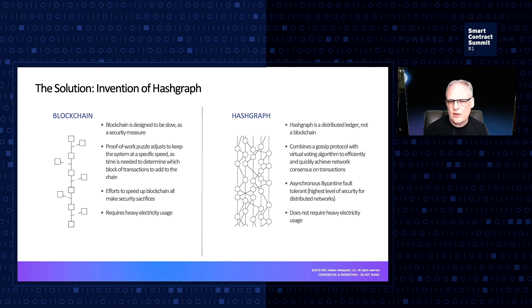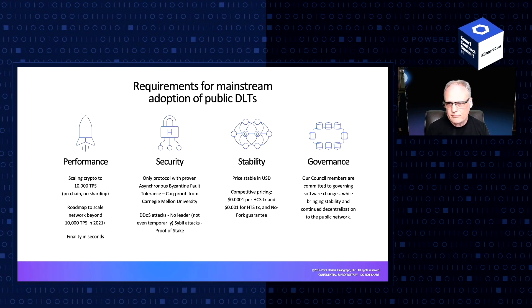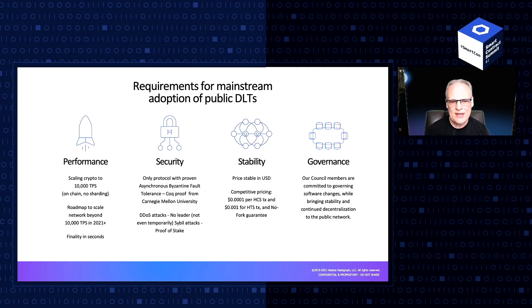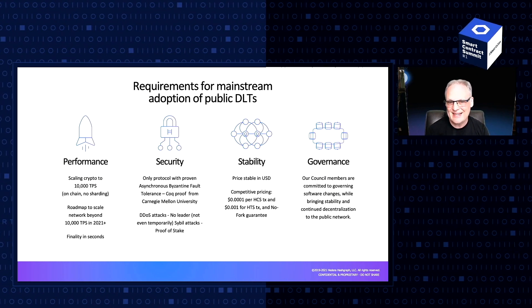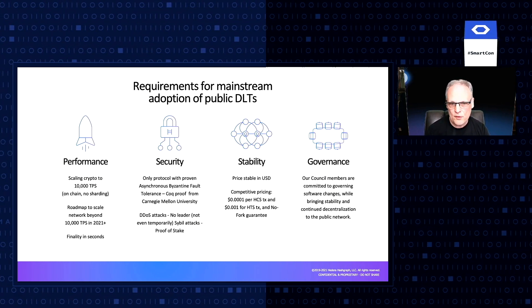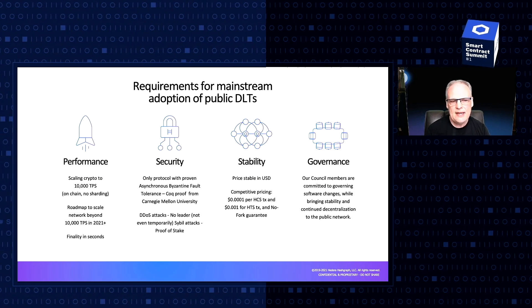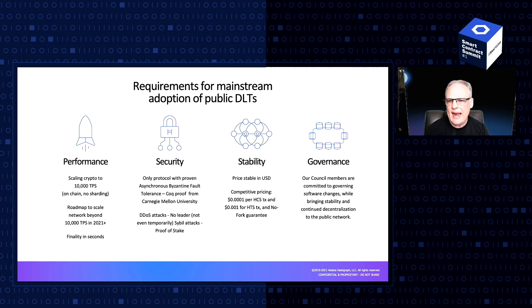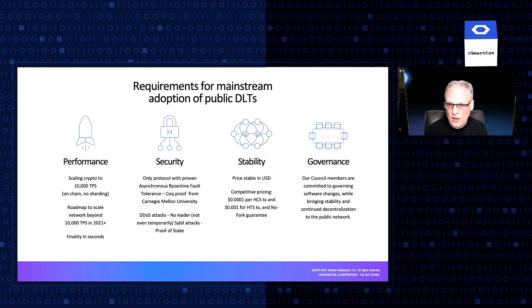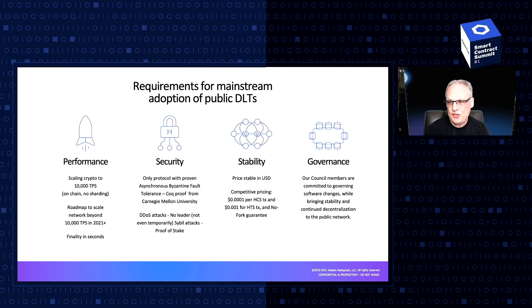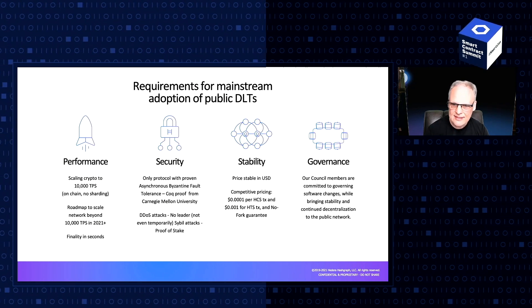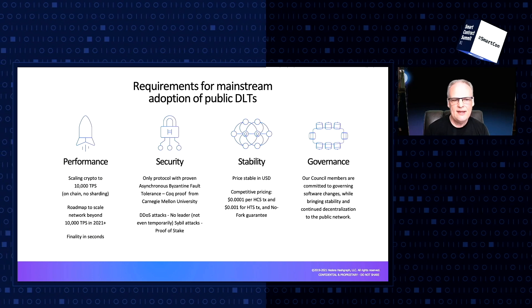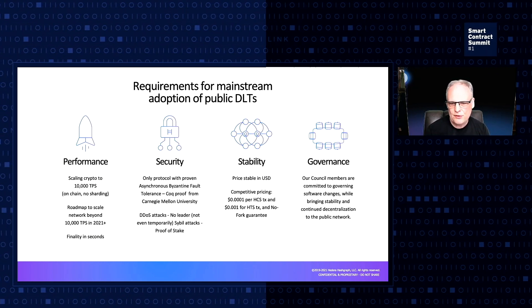We decided to create a public network using Hashgraph in 2017. There were four fundamental obstacles to mainstream adoption of public DLTs that we identified at that time: performance, security, stability, and governance. In terms of performance, we knew that we needed many thousands of transactions per second. The Hedera network, which implements Hashgraph today, achieves that — 10,000 TPS with seconds of latency to finality.